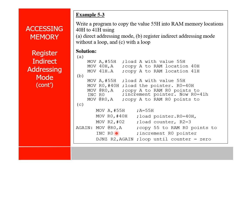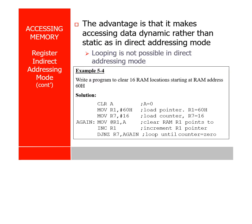The basic difference between direct addressing and register indirect addressing is: with direct addressing you cannot repeat a group of instructions, but with register indirect addressing you can repeat a group of instructions again and again. Looping is not possible in direct addressing mode.